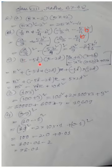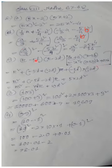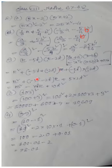Next: (r minus 5t)(r minus 2t). This uses the identity (x+a)(x+b) = x² + (a+b)x + ab. Here x is r, a is minus 5t, and b is minus 2t.